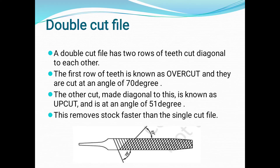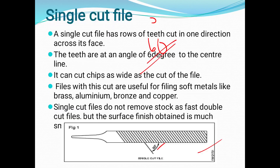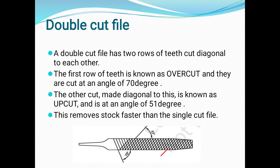The rows of teeth are in one direction — that is the single cut file. The double cut file has teeth that are over-cut; the angle of the teeth is 70 degrees. If we cut a diagonal line in the first row of teeth, we cut two rows of teeth.